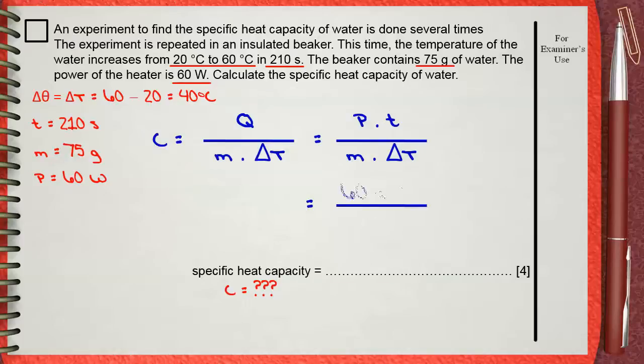So power which is 60 watts multiplied by time which is 210 seconds divided by M the mass which is 75 grams. This is multiplied by delta T which is 40 degrees Celsius. By doing this calculation,